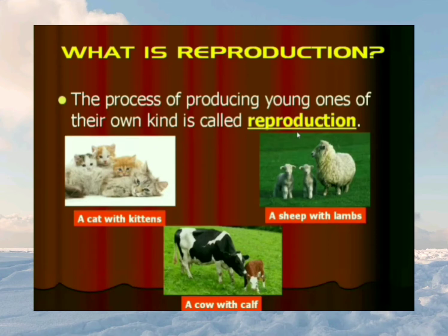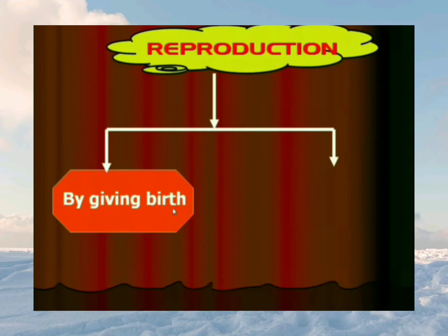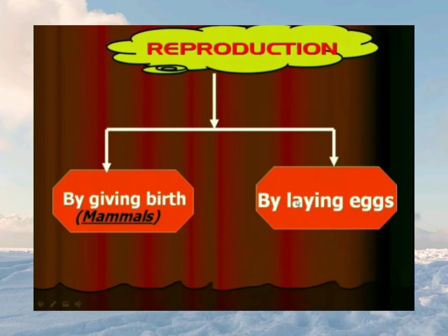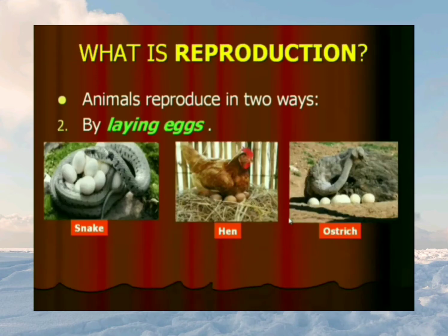Animals reproduce to continue their generation. All animals reproduce in two different ways. The first one is by giving birth — animals that give birth to young ones are called mammals. The second way is by laying eggs. Examples of animals that give birth: a bitch gives birth to puppies, a whale gives birth to a calf, and a mare gives birth to a foal. Animals like snake, hen, and ostrich lay eggs to reproduce.